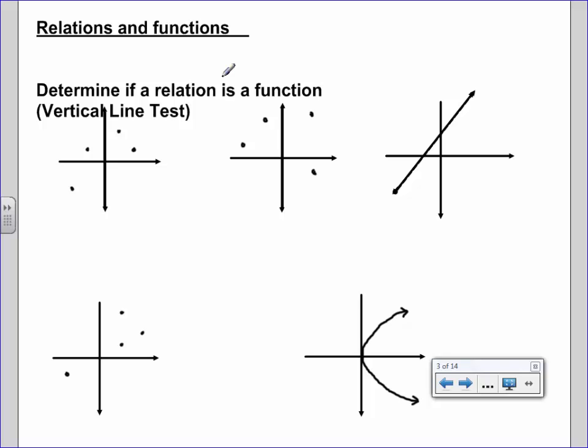Okay, if it fails the test it is not a function. So if we look at this first one, there's no place that we can draw a vertical line that will hit more than one time. So this passes the test and we say yes, it is a function.